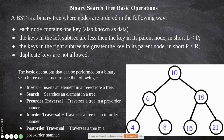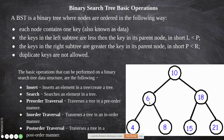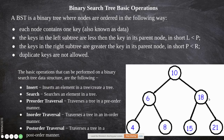In a binary search tree, the key stored in each node must follow an additional rule. The key present in the parent node must be greater than the left child and less than the right child. So once again: the key values in the parent node must be greater than the left child and lesser than the right child, which means the left child should be lesser and the right child should be greater than the value stored in the parent node.